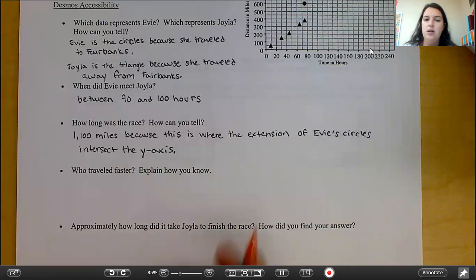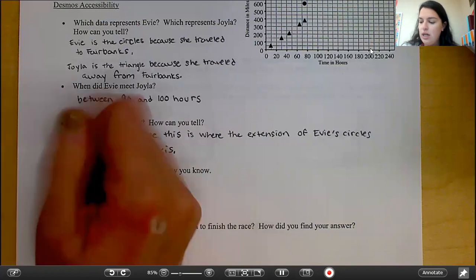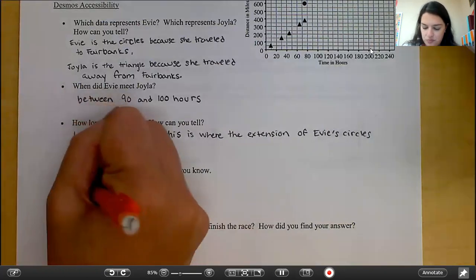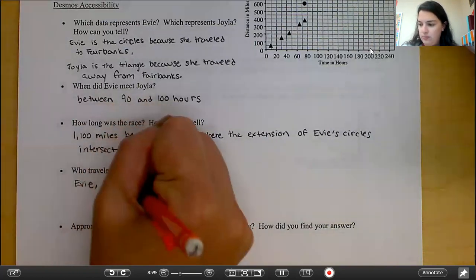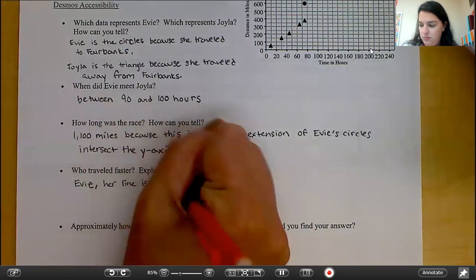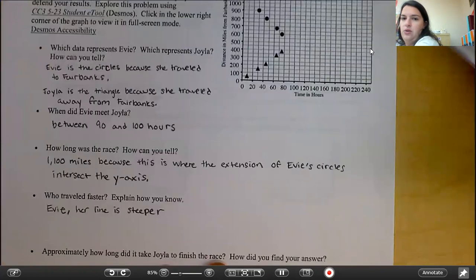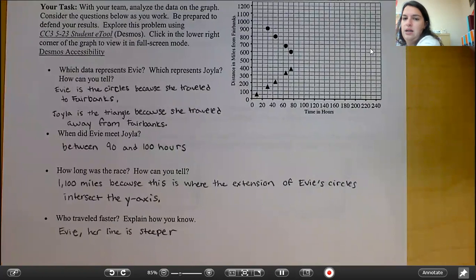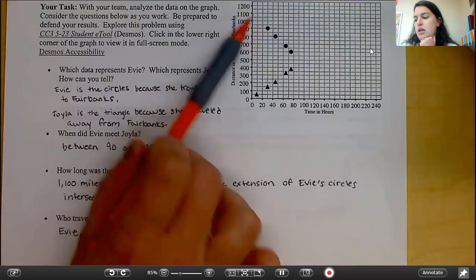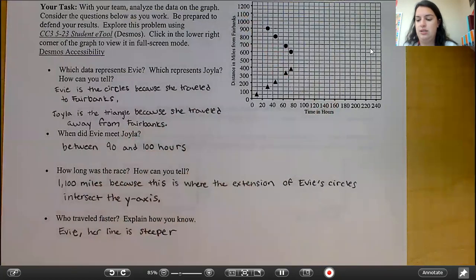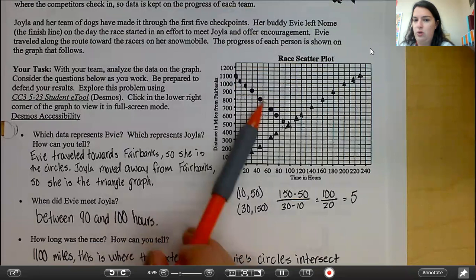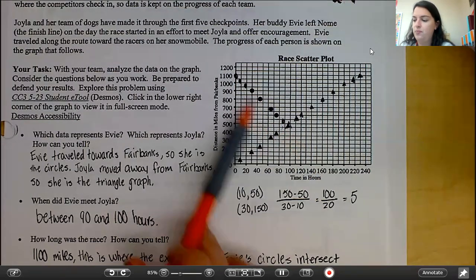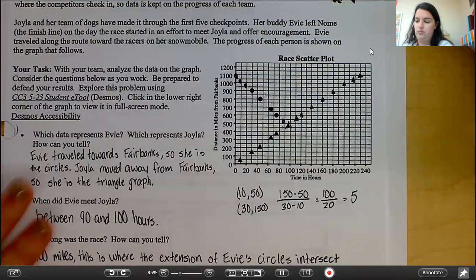If you're back with me, you've extended your line, or you've answered the next two bullet points. So who traveled faster? How do you know? Hopefully you said Evie. Evie traveled faster because her line is steeper. So if you're looking back at the graph here, I did not extend on this one, but I'll show you. So you can see that her line is going down faster. It's steeper. So looking here again, here come her circles. They're going down at a steep rate. So she would be faster.